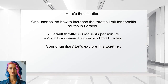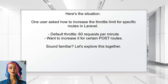Here's the situation. One user asked how to increase the throttle limit for specific routes in Laravel. They mentioned using the default throttle setting of 60 requests per minute, but wanted to increase it for certain POST routes. Sound familiar? Let's explore this together.